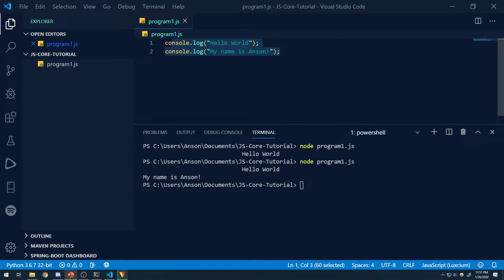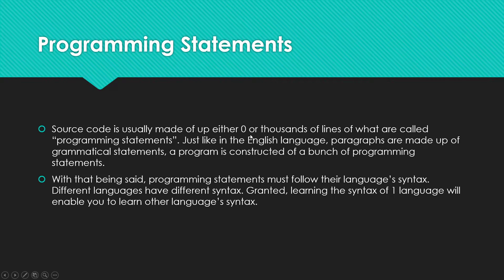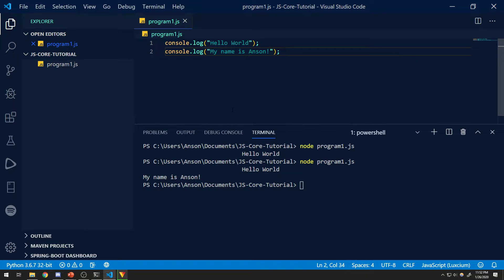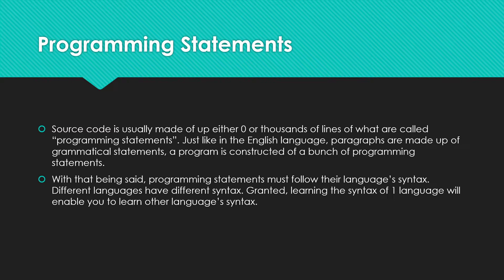Let's go ahead and get started with programming statements. So what are programming statements? The code that we just have — this source code over here — is called source code. Source code is all of the programming statements written inside that .js file, or whatever code file you're working with. In this case, we have JavaScript source code. Source code is usually made up of either zero or thousands of lines of what are called programming statements — just like in the English language, paragraphs are made up of grammatical sentences, a program is constructed of a bunch of programming statements.